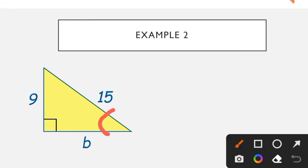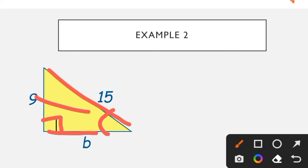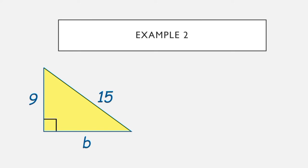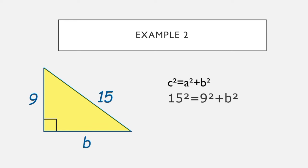For Example 2, our opposite is 9, the adjacent is the missing value, and the hypotenuse is 15. We find the missing value of the adjacent using the Pythagorean Theorem formula: C squared is equal to A squared plus B squared. Substituting the known values: 15 squared is equal to 9 squared plus B squared, where 15 is the hypotenuse and 9 is the opposite.